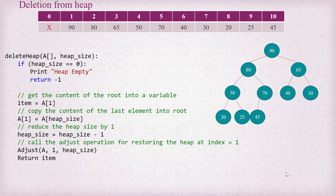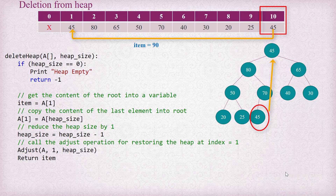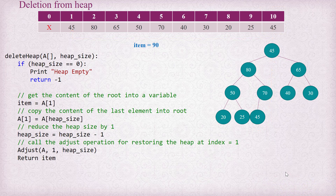Otherwise, we take out the content of the root, that is the content of index 1, into a variable item. For this example, root content is 90 and we assign that to a variable named item. Now we copy the content of the last element, that is 45, to the root at index 1, and then we reduce the size of the heap by 1 to practically delete one element from the array.